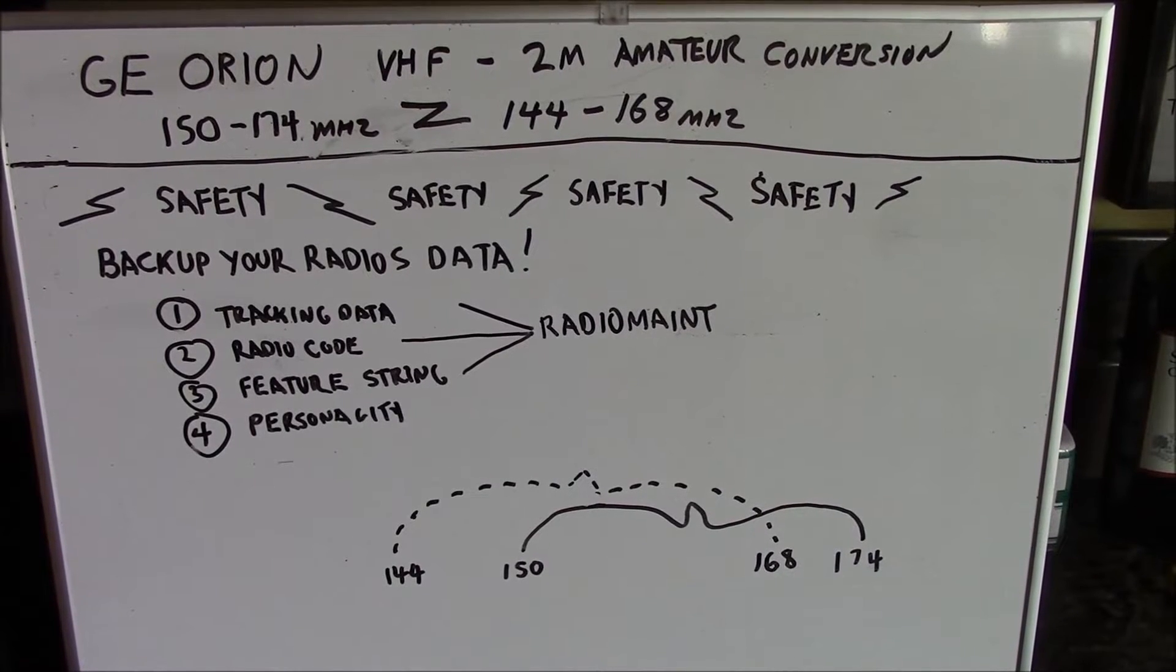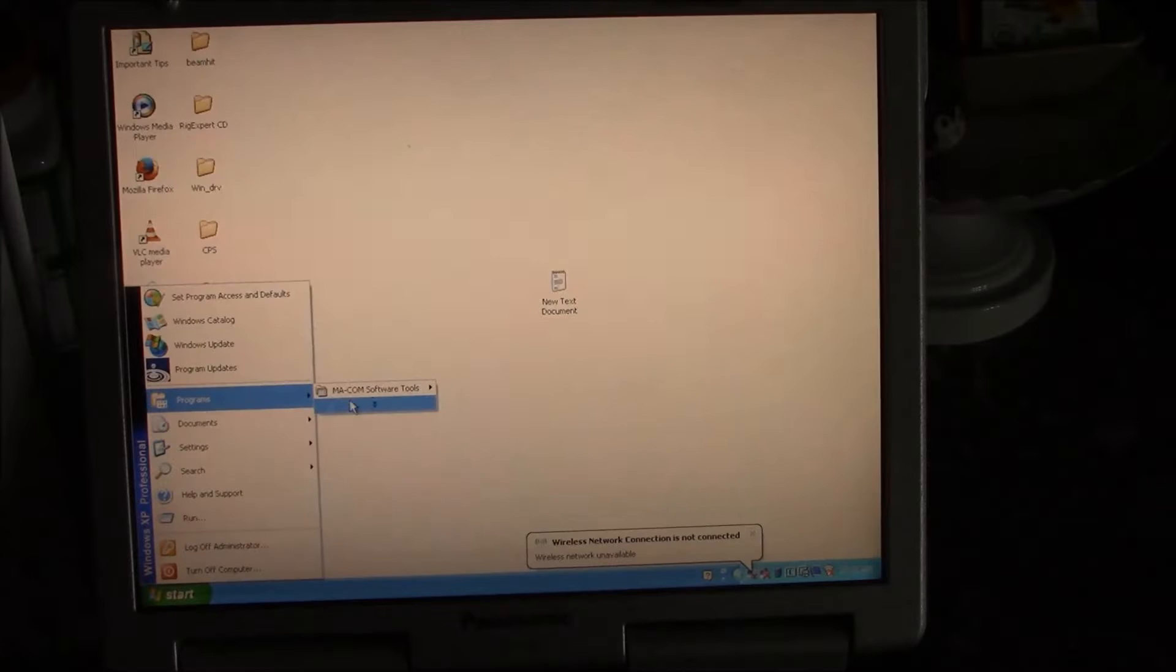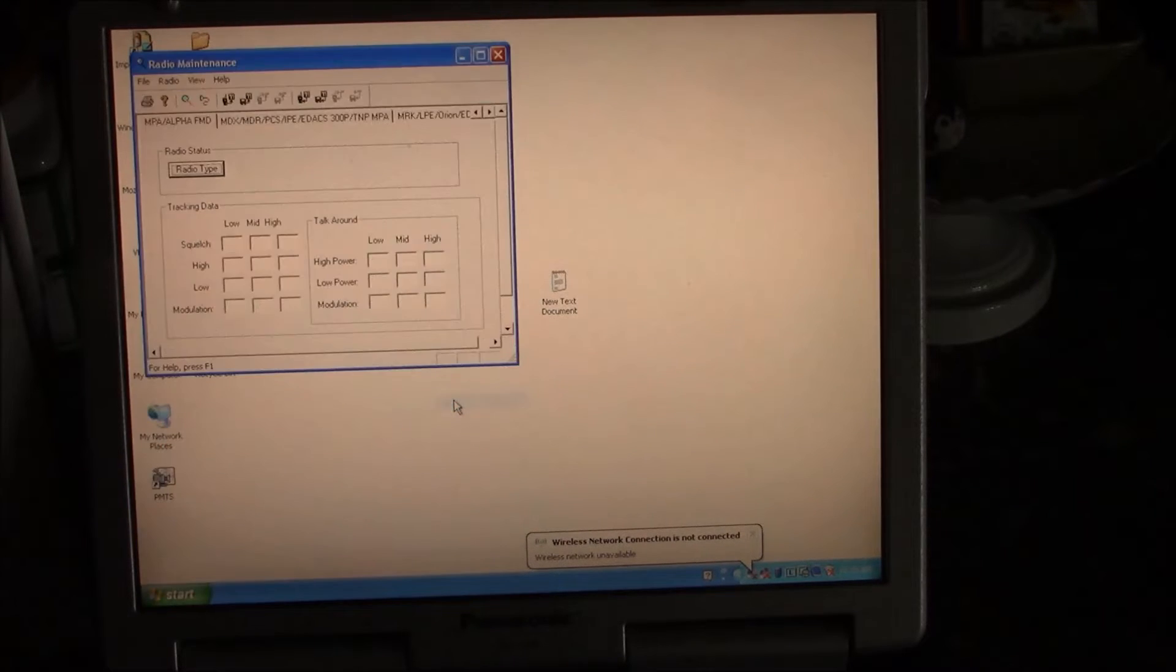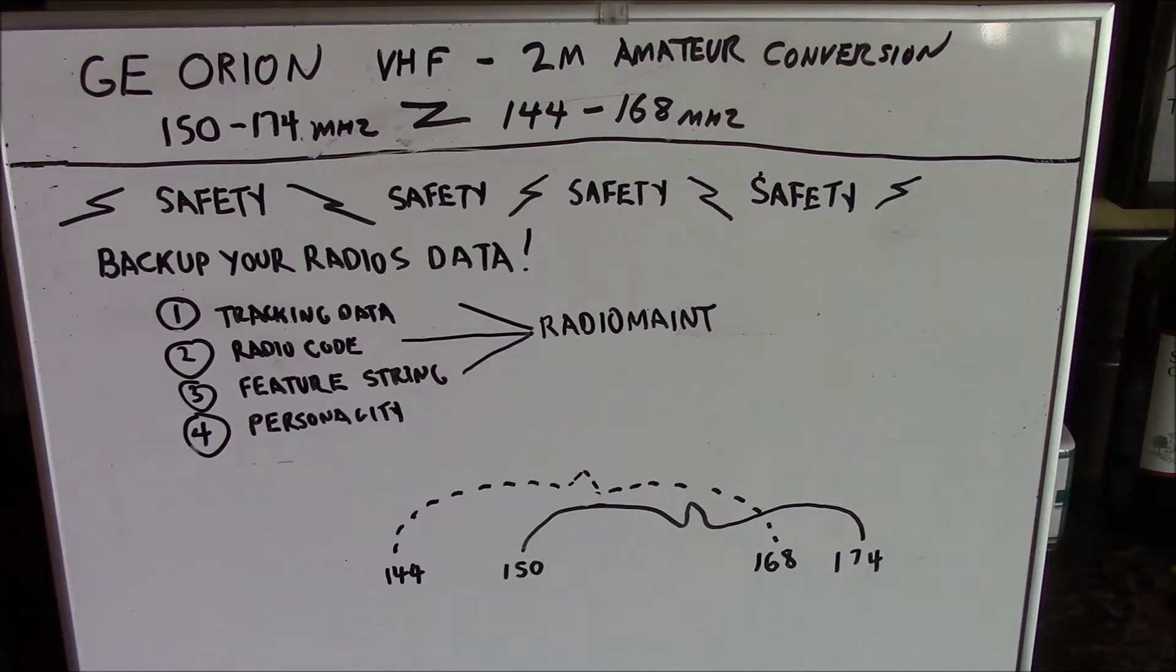Before we get started, we're going to talk about how important it is to back up your radio's data using the RadioMate program that's in your software package in Programmer 17. You can back up your tracking data, your radio code, your feature string, which is also known as feature encryption, and the personality. Of course, you can archive in Programmer itself. But it's extremely important in case you brain-dead your radio and you have to lab it back to life. Having this stuff backed up is going to make your life much easier.